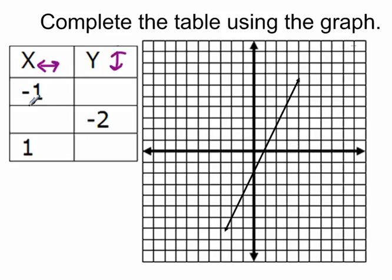In this first row, we're given the x-coordinate and asked to find the missing y-coordinate. Because it's an x-coordinate, we're going to move either left or right. The coordinate is negative 1, which means we want to move left because it's negative. Where along this line does the function cross? Right down here.